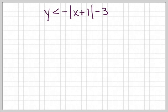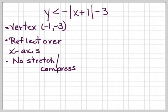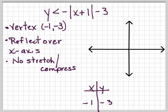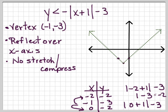Let's try: y is less than negative absolute value of x plus 1 minus 3. The vertex is at negative 1, negative 3. It is a reflection over the x-axis because the absolute value is multiplied by a negative. There is no stretch or compression — the coefficient is just negative 1, so nothing gets stretched or compressed. For the graph, I put negative 1, negative 3 in my chart, choose negative 2 and 0 — both the same distance from negative 1. Plugging those in gives me negative 2, negative 2 and 0, negative 2. Since it's less than, I use a dotted line and shade below.